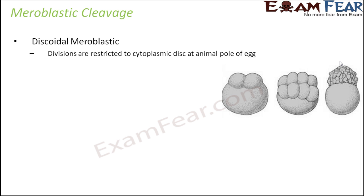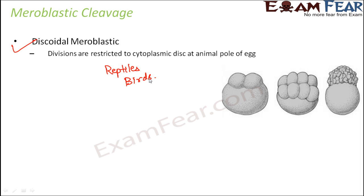The egg type that relates most directly to discoidal meroblastic cleavage is the telolecithal egg, because in telolecithal eggs the yolk is present towards the vegetal pole — towards the bottom — so cleavage cannot happen there and is restricted only to the disc-like area at the top. This type of cleavage is seen in reptiles, birds, and many egg-laying mammals.